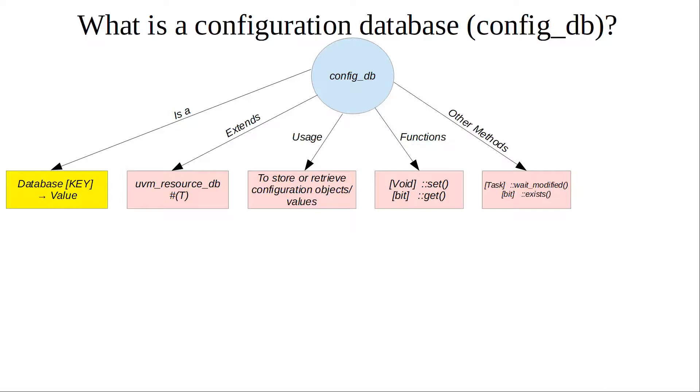The exists method returns a bit value which checks whether a particular field name exists in the config DB. It's similar to dictionaries in other languages, like in Python where you check if a key exists. Exists checks whether a field name or key exists inside the internal database.